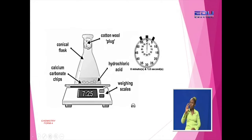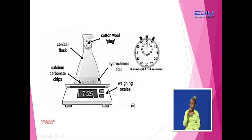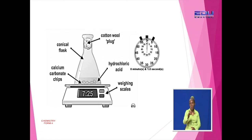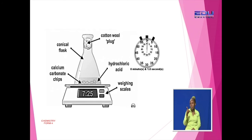Let's look at another scenario. Here we don't have a syringe, but we have calcium carbonate reacting with hydrochloric acid, and we have a beam balance. We are reacting calcium carbonate with HCl, and we are looking at how many grams of calcium carbonate are being consumed per unit time. That's why we are using a weighing balance. You can use a beam balance to measure the change in mass per unit time, but a stopwatch must still be there.